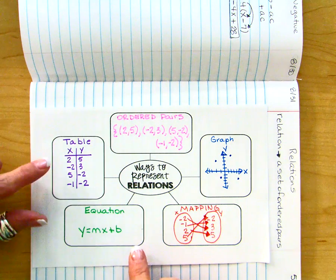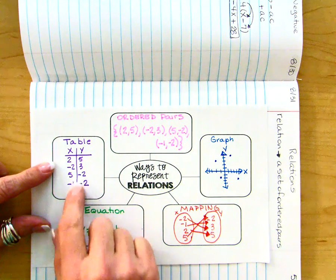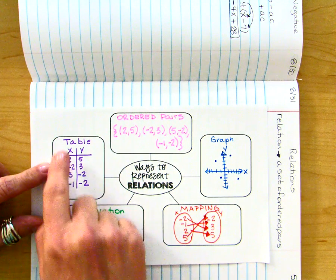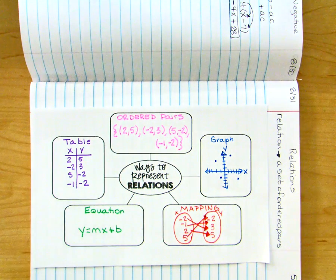And then finally, we have a table. Here are your 4 ordered pairs. Here are your 4 entries for those ordered pairs where your x values of the ordered pair goes in the x column and in the y column we put the y values from the ordered pairs.